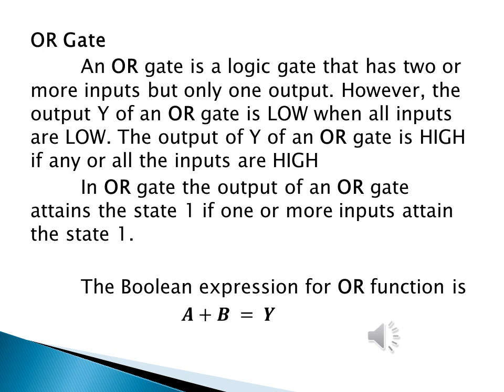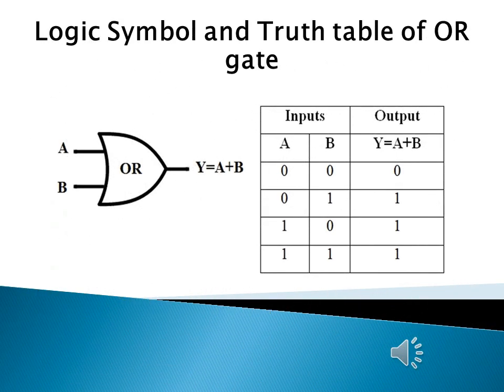The algebra used to symbolically describe the logic function is called boolean algebra. The boolean expression for the OR gate is A plus B equals Y, where the positive sign in boolean algebra refers to the logical OR function. We can see the logic symbol of an OR gate with two inputs, input A and input B, and the output Y equals A plus B.